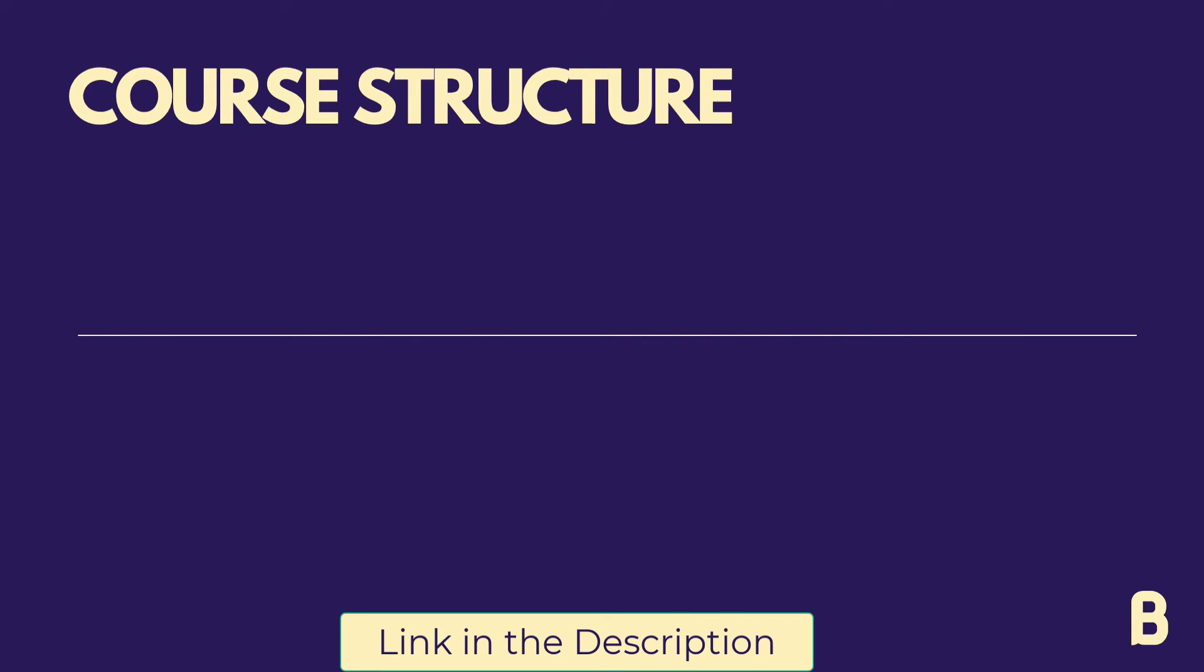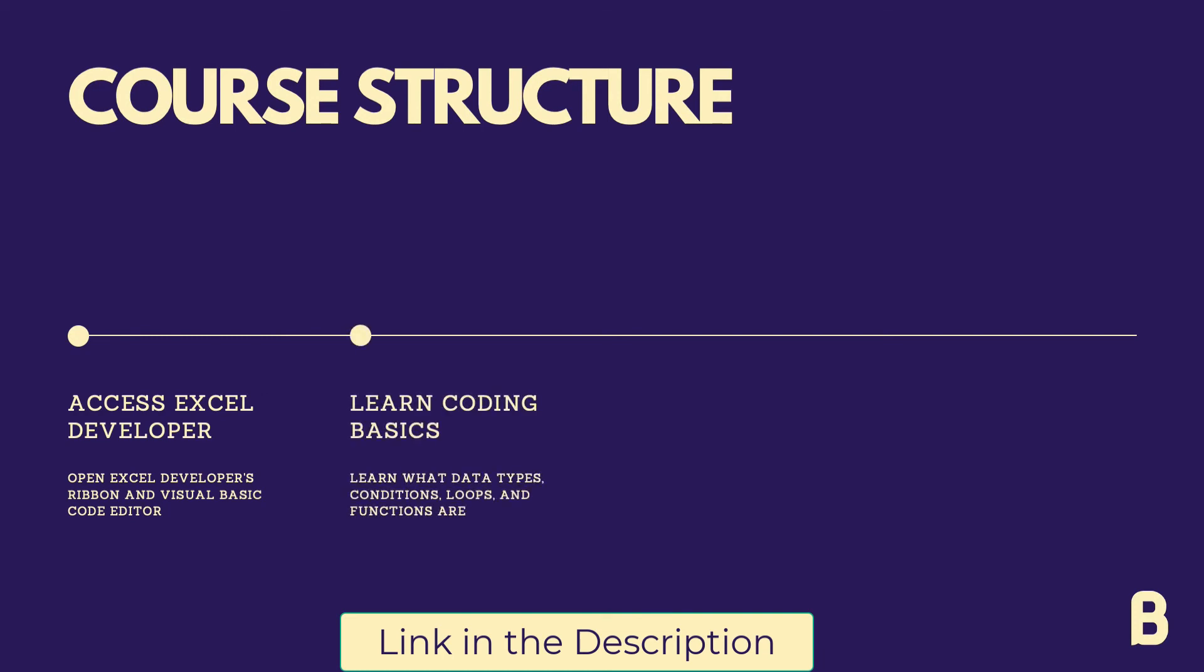Through this course, we shall first see how the Excel Developer Ribbon looks like. Through the Excel Developer Ribbon, we can record our macro, write a new macro, or code our macro. We shall then go through main programming concepts such as data types, conditions, loops, and functions. Then we shall go even deeper and see Excel objects, which are the main interface Excel gives us to access its workbook files, worksheets, or even cells.